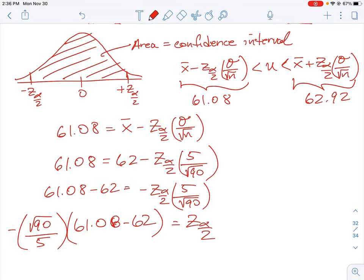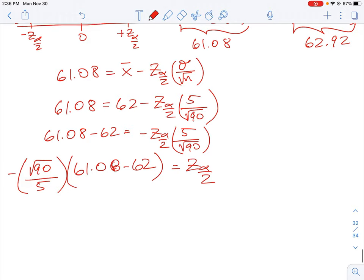Just after doing that algebra, we're going to have the square root of 90 divided by 5 times 61.08 minus 62, do that in brackets, and then we times it by negative 1. So our value here, the z_α/2 value is equal to 1.74.